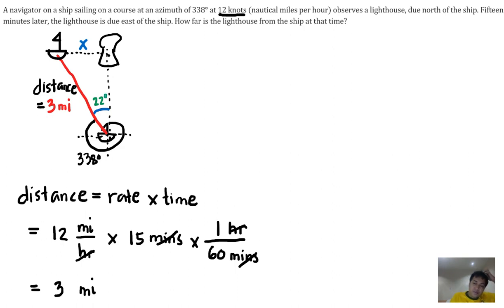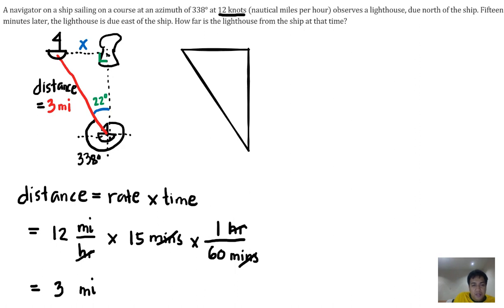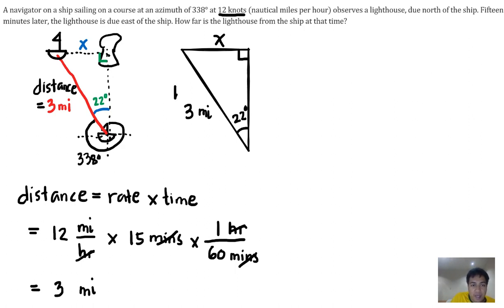We have a right triangle here. The right angle is here, this angle is 22 degrees, this side is 3 miles, and this is the unknown x. Based on our discussion of right triangles, the side opposite the 90 degrees is the hypotenuse — so 3 miles is our hypotenuse.